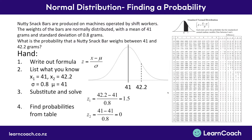We then look at our z-table. We go down to 1.5 in the left-hand column, then across the top to zero, because there's nothing after the 1.5 in our z-score. We find the number that matches up with both — that's 0.4332. That gives us our probability, and no surprises, it's the same as what we got with our calculator, because the calculator uses this formula to solve the problem.